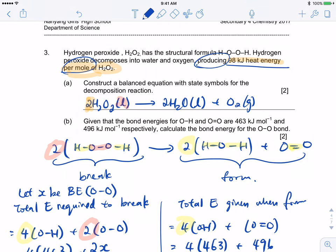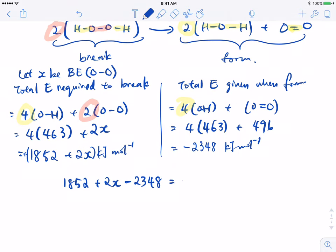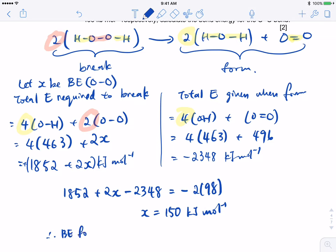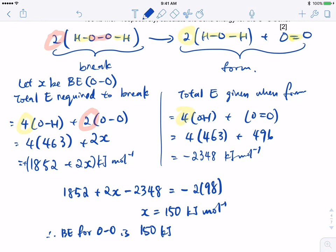Since it gives off that amount of heat, I should have a negative sign, then two times 98. Simplify the equation. You should get x equals to 150. Therefore, the bond energy for O-O single bond is 150 kilojoule per mole. Why is it that we don't need to write a sign for bond energy? It's because, by default, it is the energy required.